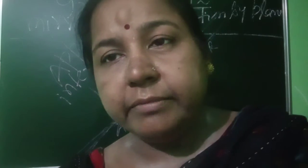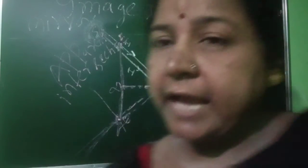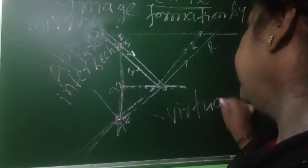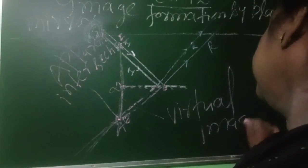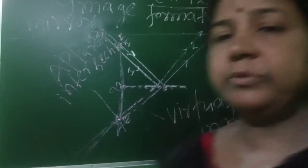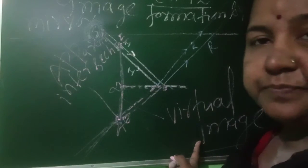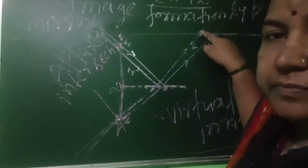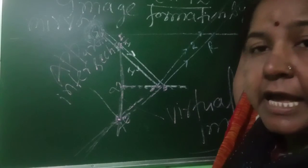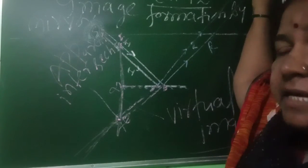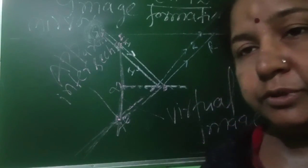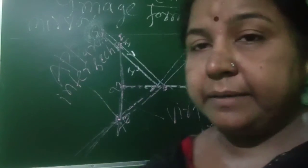Now, by the plane mirror, there is the formation of a virtual image. If the actual reflected rays intersect at a point and the image is formed at that point, then that image is called the real image. Now you have learned about the plane mirror.